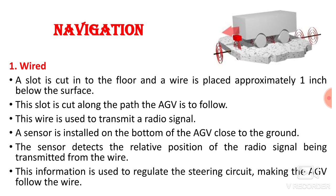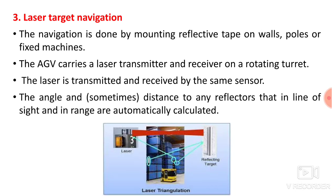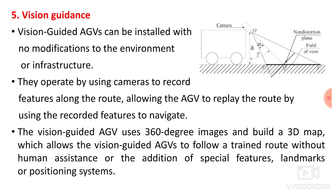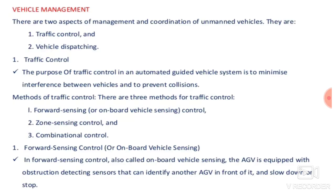So there are five guidance or navigation systems: wired, guide tape, laser target navigation, gyroscopic navigation, and vision guidance. Now we will discuss vehicle management — how traffic is managed at the shop floor. Because there will be a number of AGVs at the shop floor, especially in a flexible manufacturing system, there may be chances that AGVs collide. There are two aspects: traffic control and vehicle dispatching.